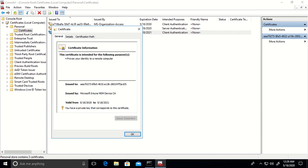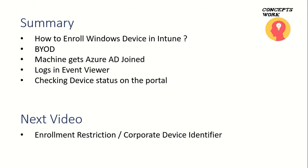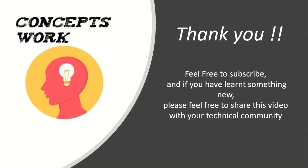This was all about how BYOD enrollment works for Microsoft Intune. Let's do a quick summary: we discussed how to enroll Windows devices in Intune, the BYOD method where the machine gets joined to Azure AD, what logs you can check, and how to check the device status on the portal at endpoint.microsoft.com or portal.azure.com. In the next video, we're going to talk about enrollment restrictions and corporate device identifiers specifically for Windows. I'll also share a script you can use to check all configuration errors either for your entire tenant or user-specific. If you've learned something new, please subscribe and share this with your technical community.